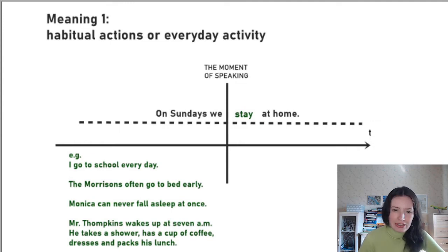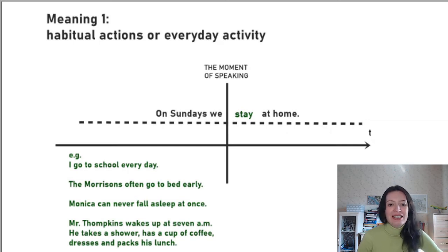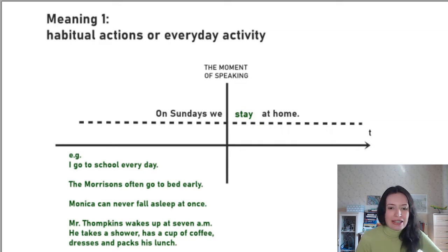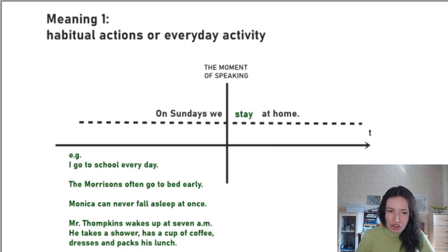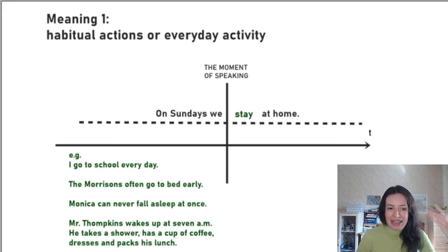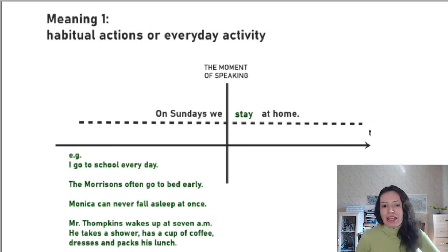The first meaning of the present indefinite is habitual actions or everyday activity. This is the standard case we study very early at school — 'I go to school every day.' There is a regular action which is repeated many times in the past, present, and future. For example: 'On Sundays we stay at home.' If you draw the timeline, this action occupies the area of past, present, and future — like a dotted line where the action happens systematically and periodically.